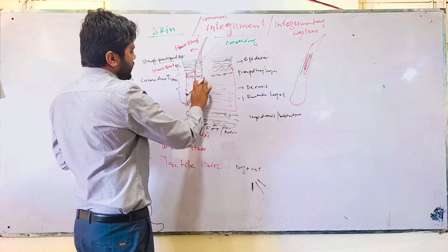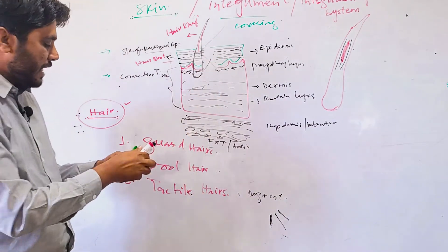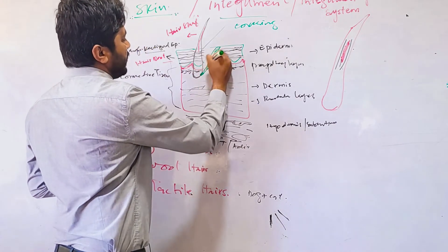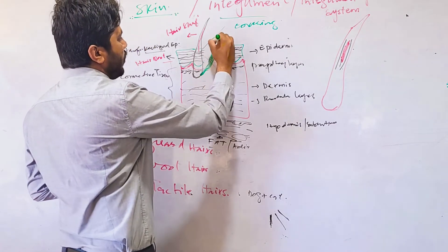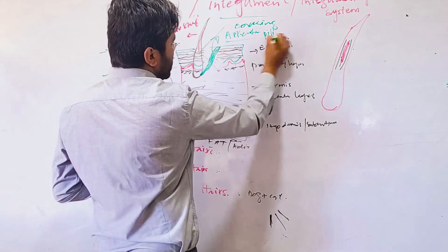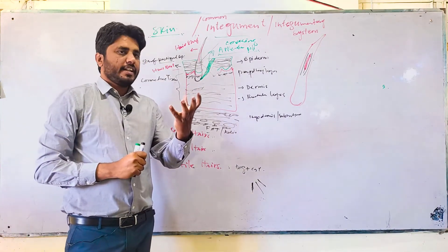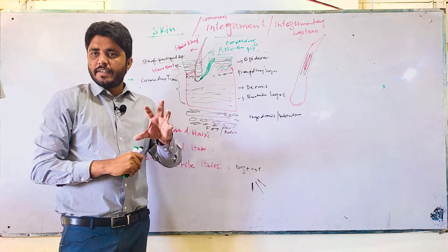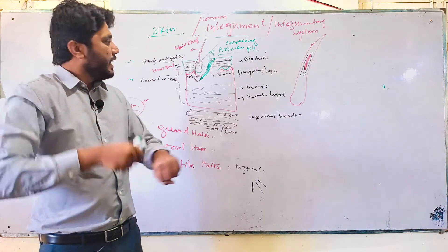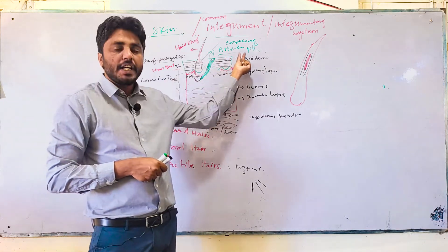Another important thing when studying hair: the proximal end of the hair is attached to a smooth muscle. That smooth muscle is known as the erector pili. In the human body, you know what goosebumps are — when your hair becomes straight, this happens due to the contraction of the erector pili muscle.